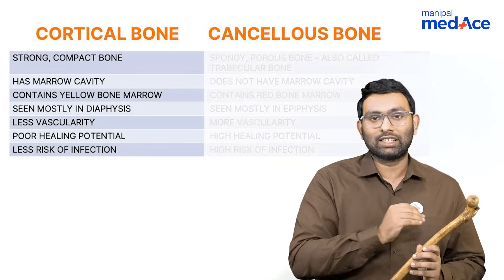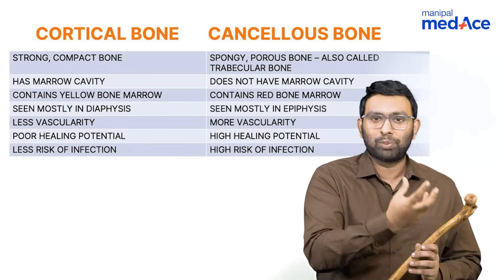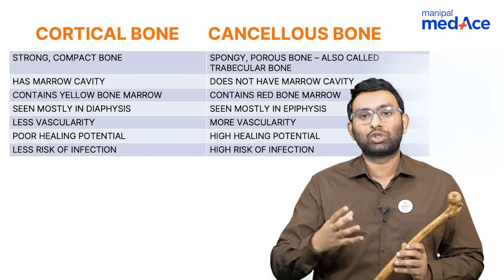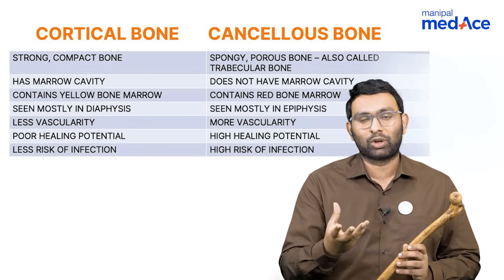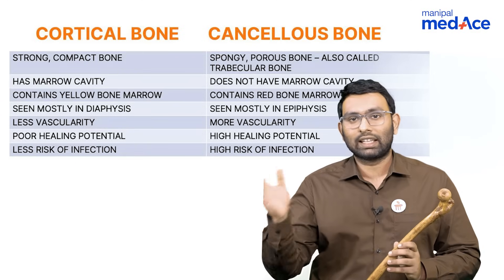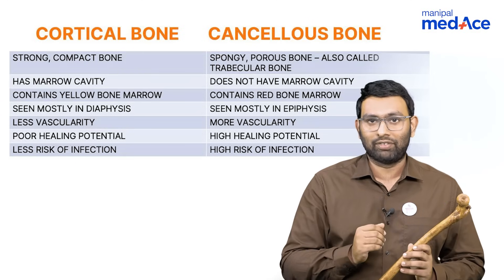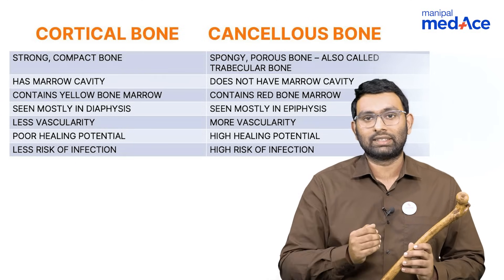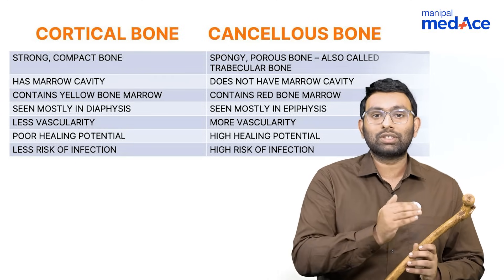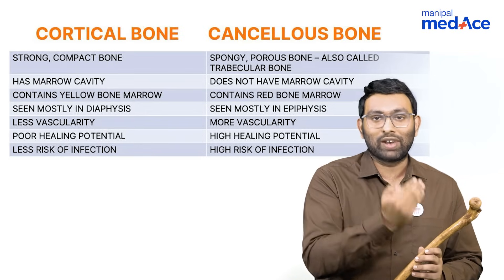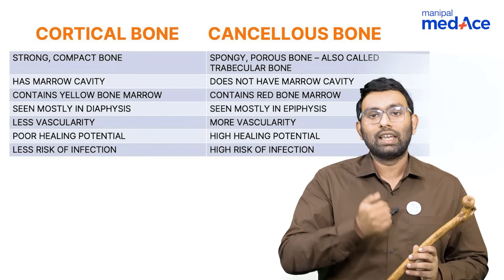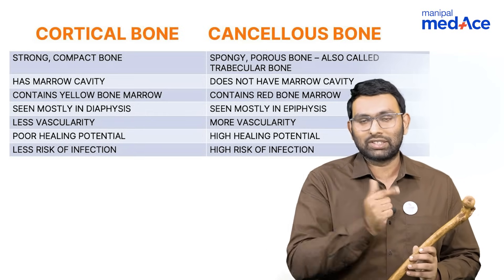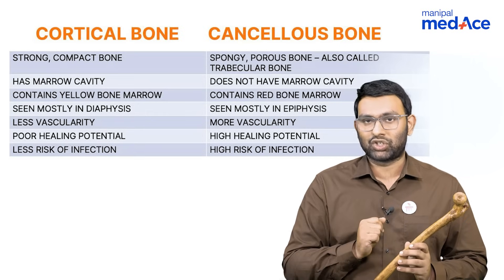Cancellous bone is a spongy trabecular bone where there is presence of red marrow cells and there is no marrow cavity. This is more commonly seen in the epiphysis, and because it has very good vascularity, there is high healing potential and also high chances of infection.